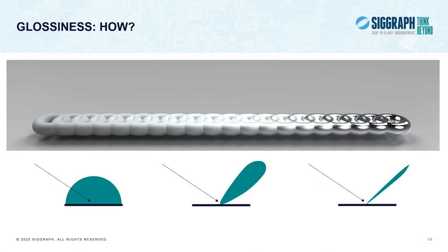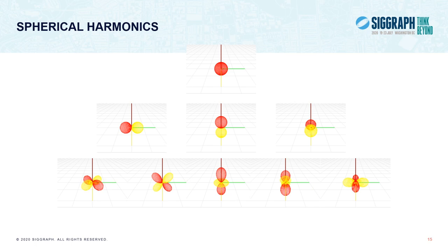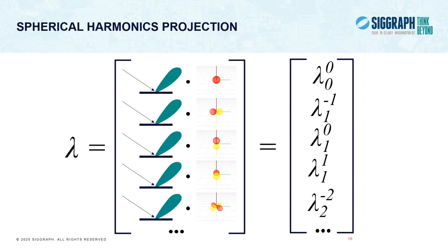To be exact, we would need an infinity of coefficients, but since we are talking about only moderately glossy surfaces, we can get away with a limited number — 100 typically. To evaluate a function for a given direction, we just compute the dot product between the vector of coefficients and the basis functions evaluated for that direction. If we need to rotate a function projected in spherical harmonics, we can efficiently compute a sparse rotation matrix that gives us the rotated coefficients. Jaroslav came up with a fast approximation for spherical harmonics rotation that would gain a lot of time.